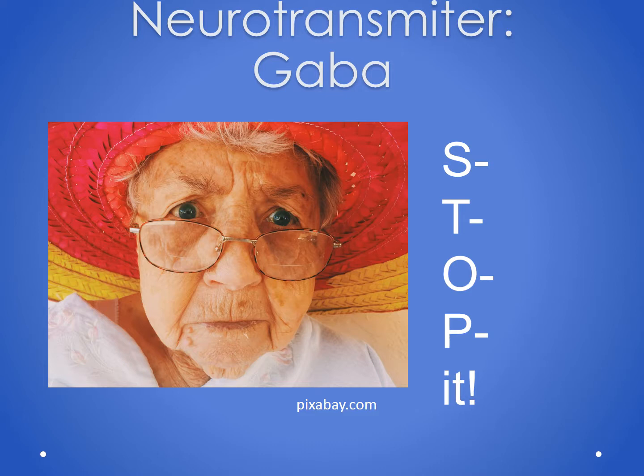O is for optic changes. Believe it or not, there are GABA receptors in the eye, so a lot of these medications that enhance GABA may cause optic changes like blurred vision or double vision. And last, P is for puzzle — these medications can all cause confusion.